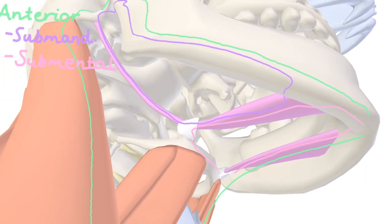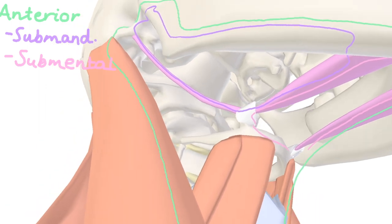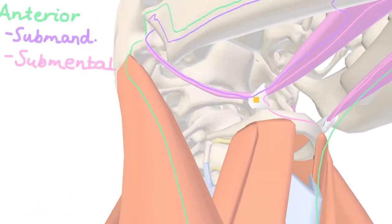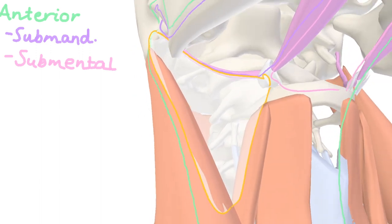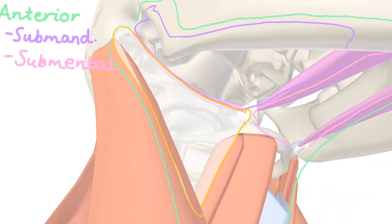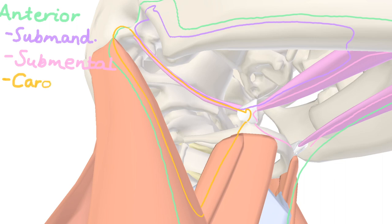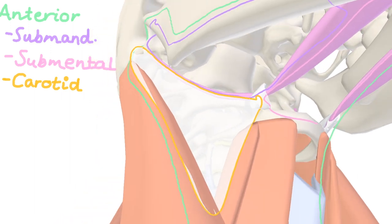Moving laterally now, let's talk about the carotid triangle, which again utilizes the posterior belly of the digastric, the sternocleidomastoid, and another muscle we'll be hearing about in this video — the omohyoid. Inside the carotid triangle is the carotid sheath, which contains the common carotid artery among other things, cranial nerve 12 the hypoglossal, and the ansa cervicalis, which is a bunch of nerves that supply muscles in this area.